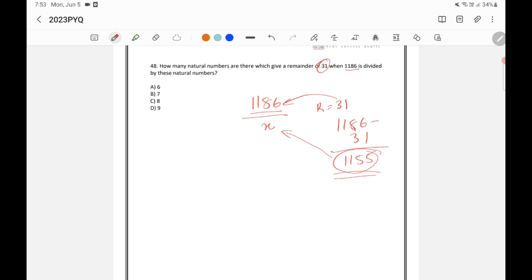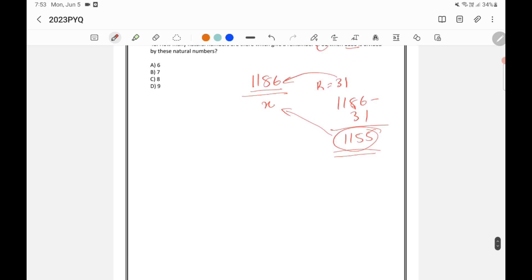We need to find out the factors of 1155. If I do the prime factorization of 1155, 11 will go. This is 1 and 05. Now 5 can go, it will become 21. Now 3 can go, it will become 7. So 1155 I can write as 3 into 5 into 7 into 11.